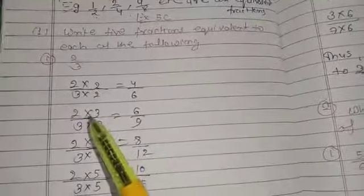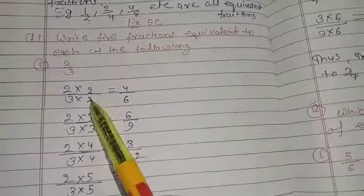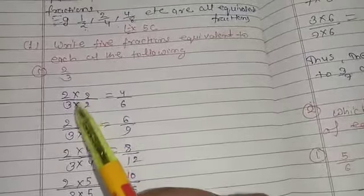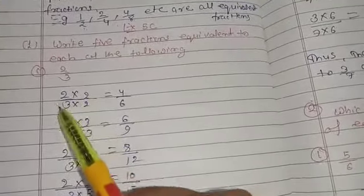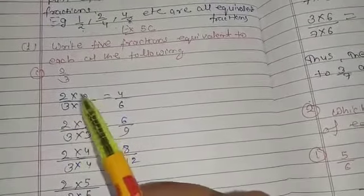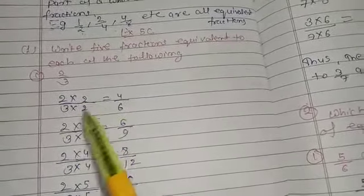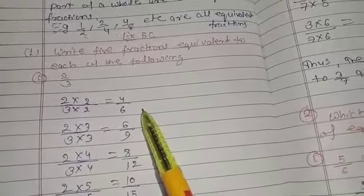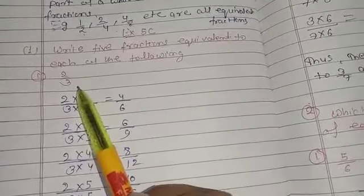To find equivalent fractions, multiply both the numerator and denominator of the given fraction by 2. For 2 upon 3, multiply by 2 to get 4 upon 6, your first equivalent fraction.